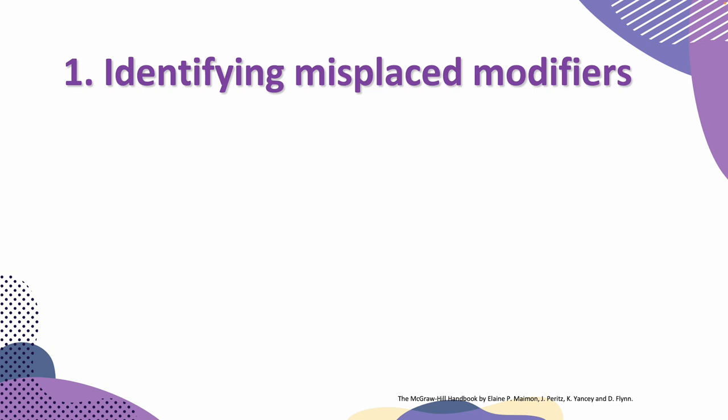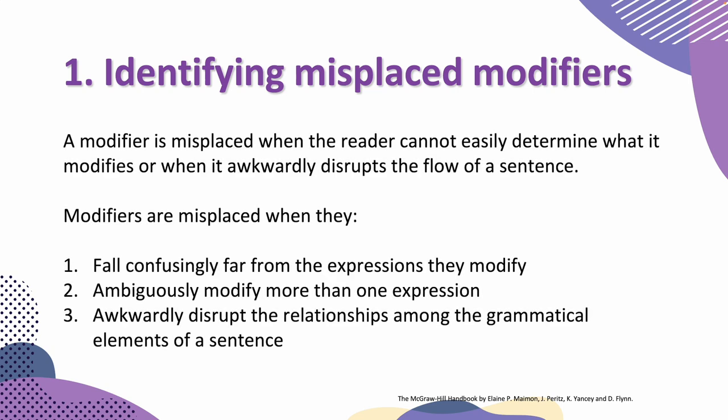Identifying misplaced modifiers. A modifier is misplaced when the reader cannot easily determine what it modifies or when it awkwardly disrupts the flow of a sentence. Modifiers are misplaced when they fall confusingly far from the expressions they modify, ambiguously modify more than one expression, or awkwardly disrupt the relationships among the grammatical elements of a sentence.